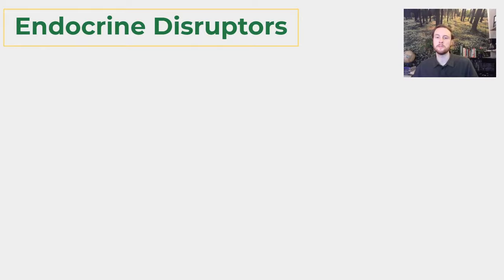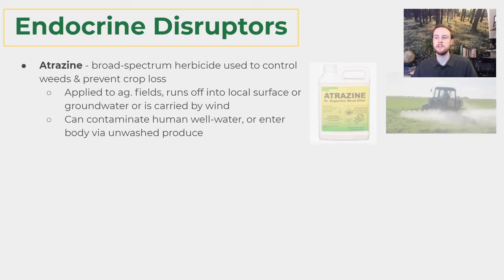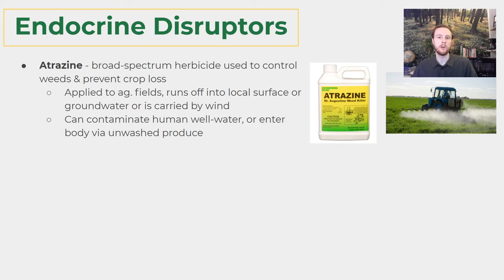Now we'll look at a few more specific endocrine disruptors. Atrazine is an herbicide used widely on many different plant pests, and we can see it here being applied to agricultural fields. The problem is that heavy rain or wind shortly after application can cause it to run off into local surface waters or infiltrate groundwater sources. Humans could potentially be exposed to atrazine by eating produce that has been sprayed without proper washing, or if it leaches into groundwater used for drinking water, especially in wells in rural communities.